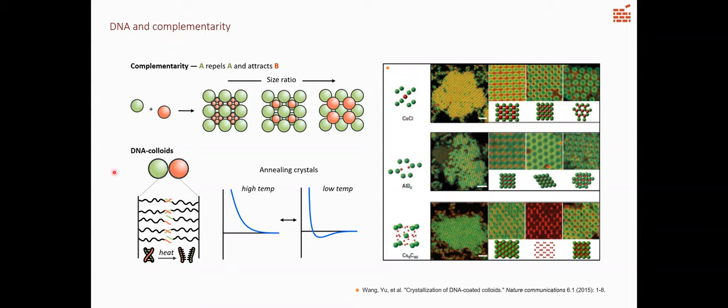The premier way to program complementarity is to coat colloidal particles in strands of DNA. The green particle coated in strand A is only going to form a bond with the red particle that has strand A prime. Another attractive feature is that the hybridization between the DNA strands is temperature dependent. As I heat it up, those will break. So at high temperature, we have a purely repulsive force, but as we cool that potential well dips down and at some point conditions are just right for crystallization.